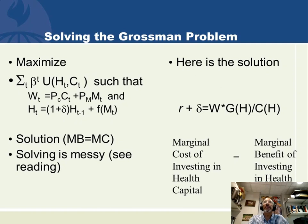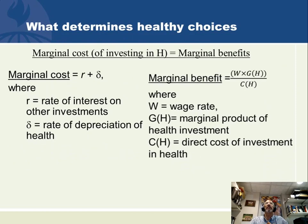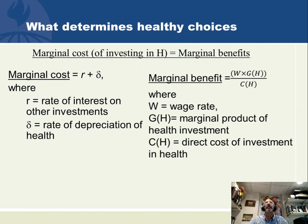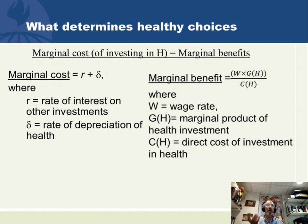Let me explain what g of h and c of h are. The marginal cost is r plus delta: r is the rate of return of money that could be used for consumption, and delta is the rate of depreciation of health capital. When I had money in the bank, it wasn't depreciating at rate delta — that was covered by parameter r. But now that I've put money into my body's health, I take on this new cost delta. So the total marginal cost of shifting from financial investment to health capital is r plus delta.